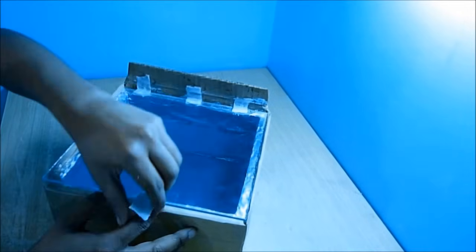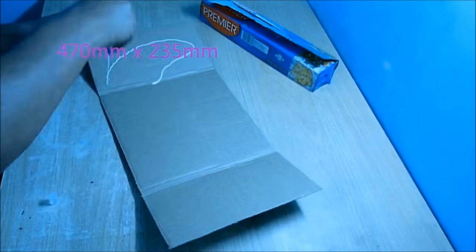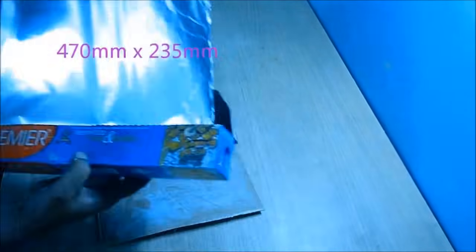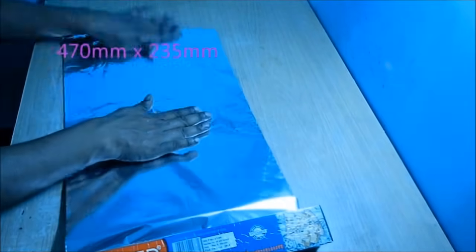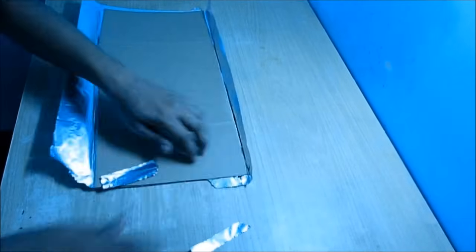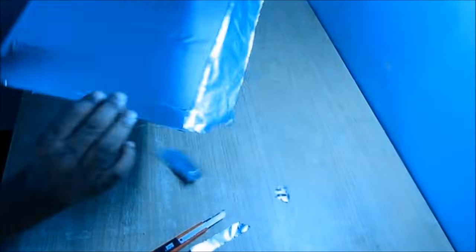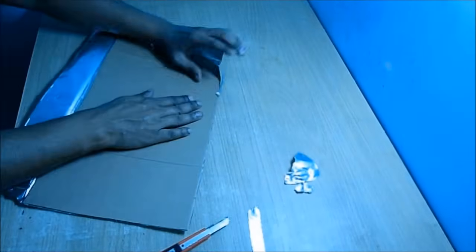Now we have to make a reflector. The size is shown on the screen. Put aluminum foil on top of it, glue it and cut the extra out. This is the reflector, fold it.